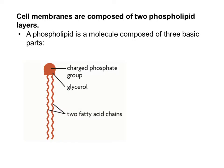So before we go any further, let's review the phospholipid structure. The phospholipid has the phosphate head up at the top, which is composed of a phosphate group and glycerol. Remember that the phosphate head is polar, therefore it likes water — it will dissolve in water — and we can also describe that as being hydrophilic, which means to be attracted to water. And then the two fatty acid chains coming off of the phosphate head are nonpolar, and we can describe those as hydrophobic.